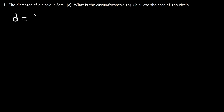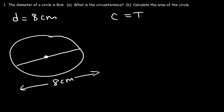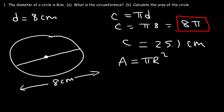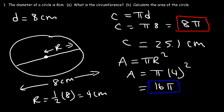Problem 1: The diameter of a circle is 8 centimeters. Calculate the circumference and the area. The circumference is π times the diameter, so it's π times 8, or 8π — which equals approximately 25.1 centimeters. For the area, the radius is half the diameter, so it's 4 centimeters. The area is π r squared, which is π times 4 squared, or 16π — the exact answer — approximately 50.27 square centimeters.